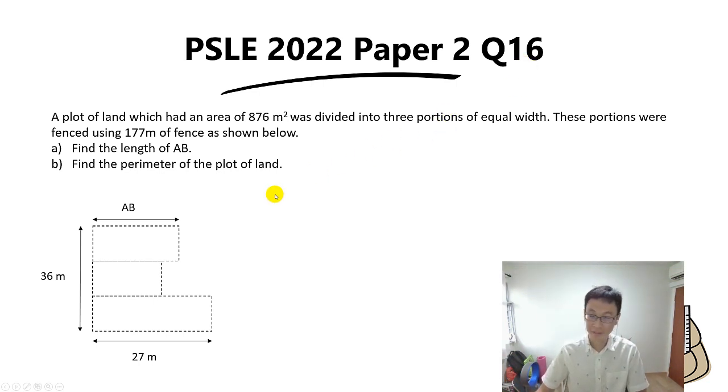This question involves area and perimeter. A plot of land which had an area of 876 meters squared was divided into three portions of equal width. These portions were fenced using 177 meters of fence, as shown using the dotted lines.